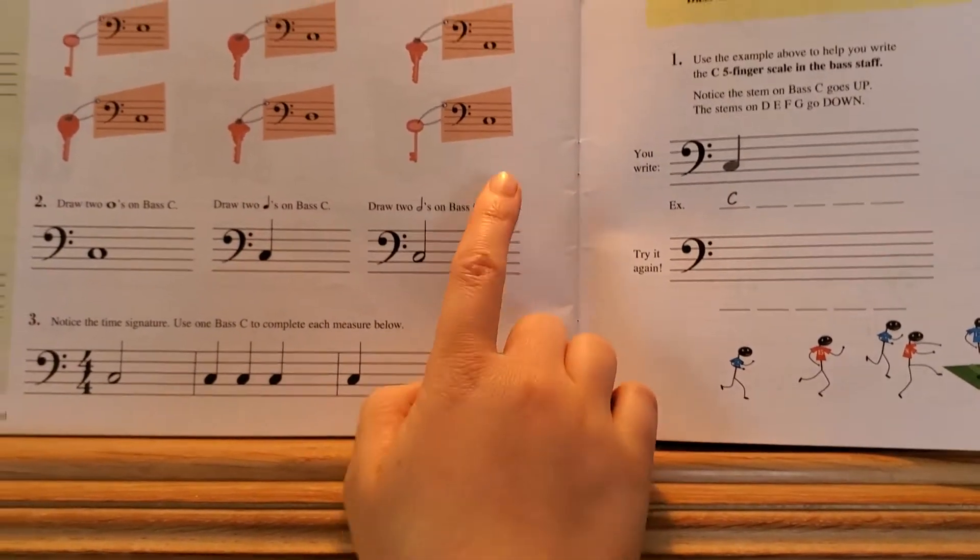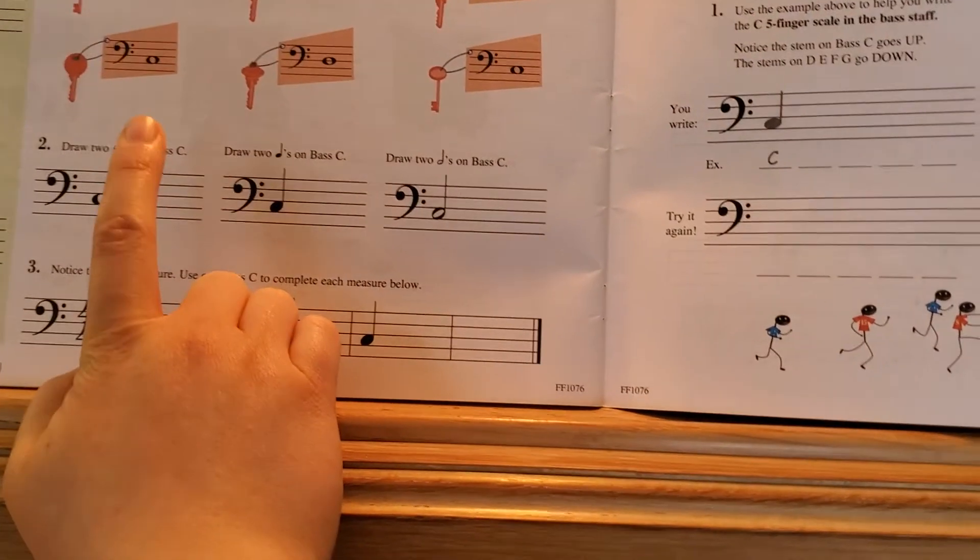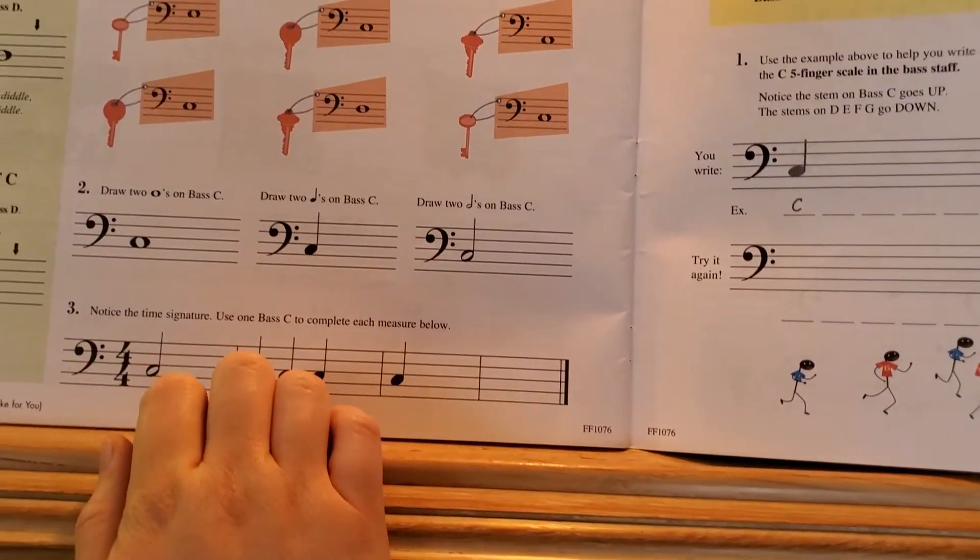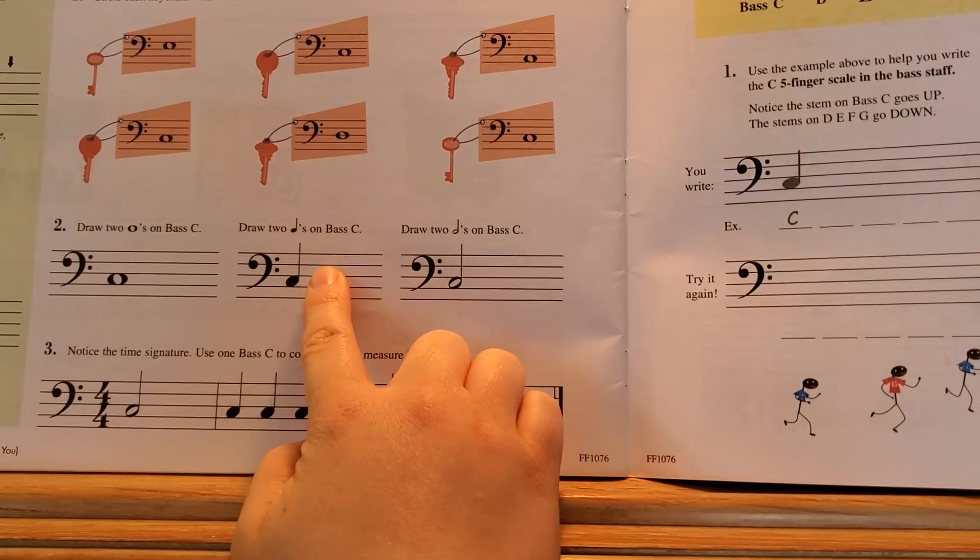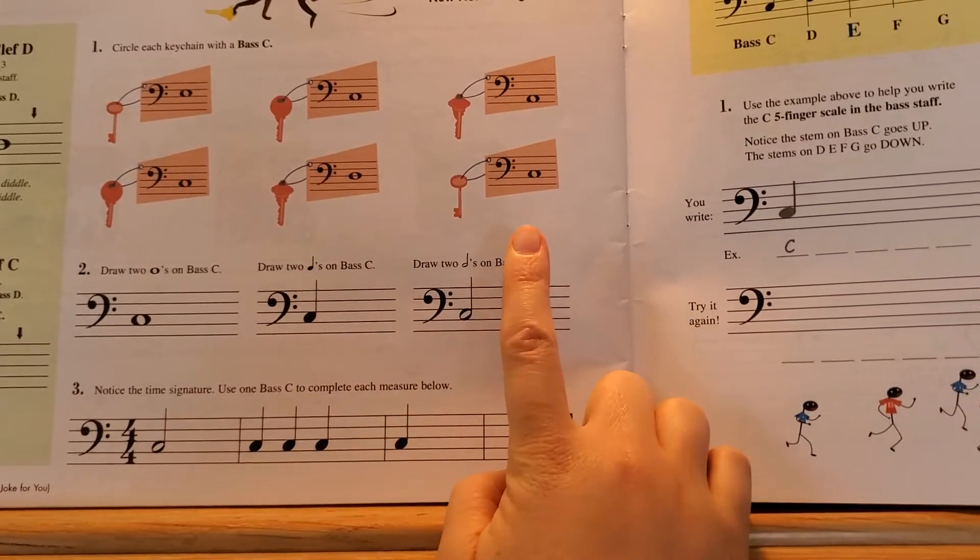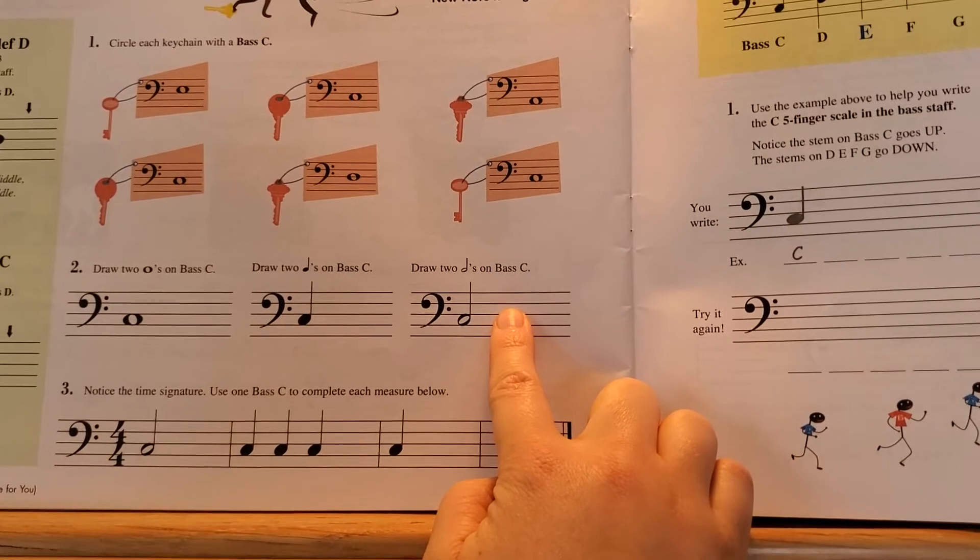I would quiz her on how many beats these get. So I would say, how many beats does a whole note get? And she'd say four. And then how many beats does a quarter note get? She'd say one. How many beats does a half note get? And she'd say two.